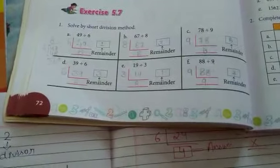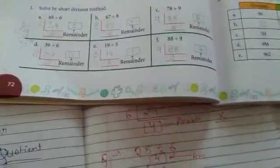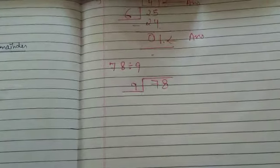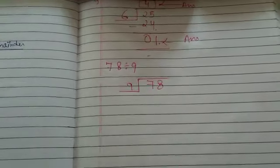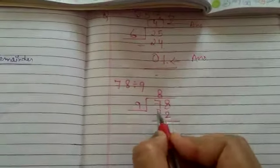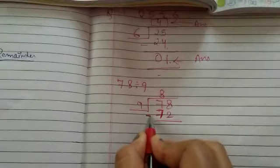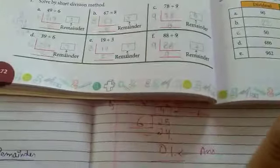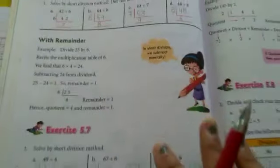In your copy also, complete Exercise 5.6 and 5.7 both in your book and in your notebook. See the example: 78 divided by 9. Put 9 here, 78 here. 9 ones are 9, 9 twos are 18, 9 threes are 27, 9 fours are 36, 9 fives are 45, 9 sixes are 54, 9 sevens are 63, 9 eights are 72. The next, 9 nines are 81, which is greater than 78, so we cannot use that. We use 9 eights are 72. Subtract: 8 minus 2 is 6, 7 minus 7 is 0. So the remainder is 6 and the quotient is 8. Fill Exercise 5.6 and 5.7 in your book as well as in your copy.